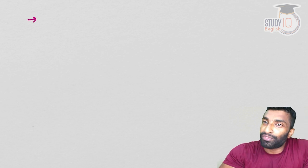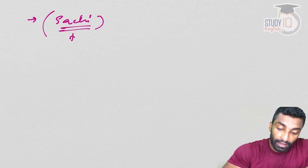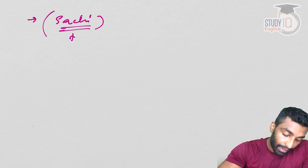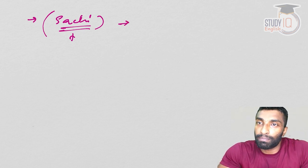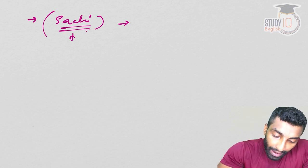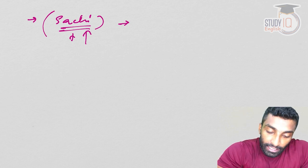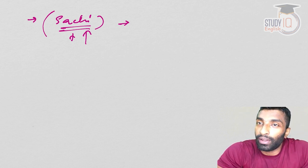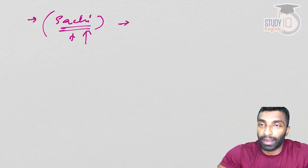Ashoka also constructed some very beautiful stupas — one of them was Sanchi. Remember that the initial nine stupas are very important because they contain the original relics of Buddha. There are also stupas which have symbolic relics. Sanchi is made more beautiful than the nine stupas with original relics because this is the home area of Ashoka's wife, Sri Devi — that is the reason why Sanchi was made more beautiful.